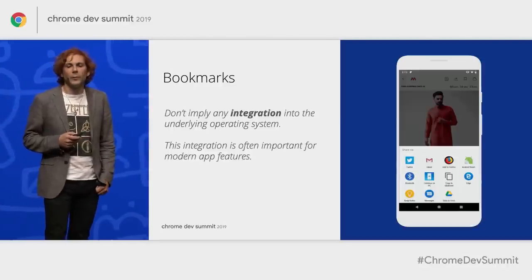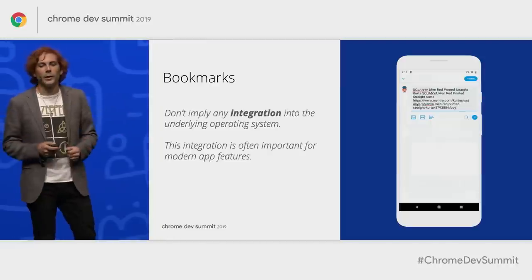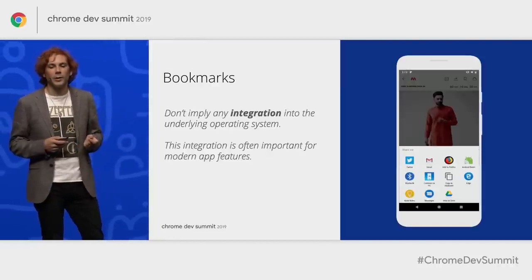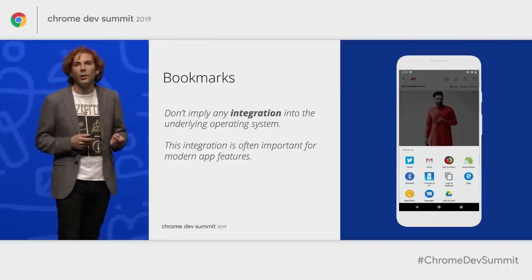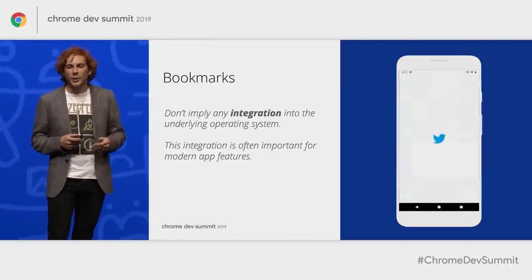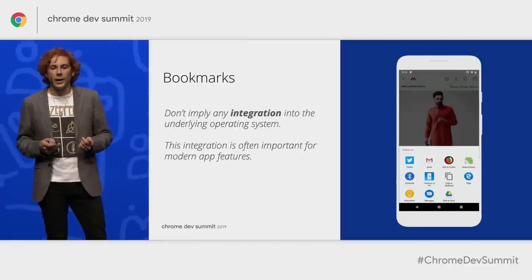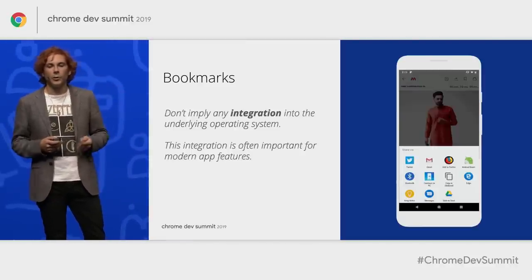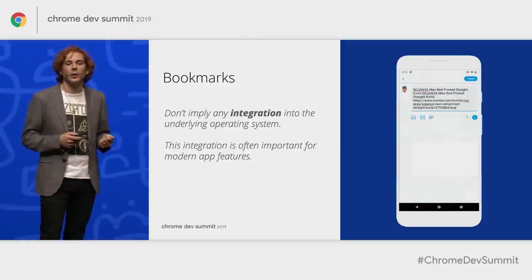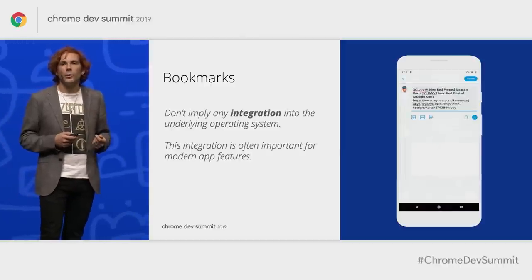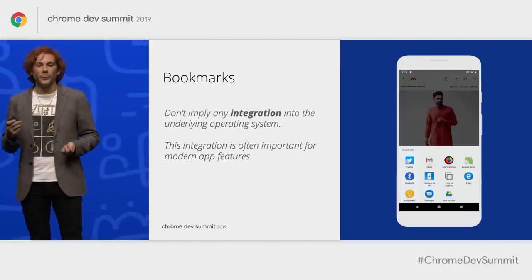The second challenge for bookmarks on mobile is that apps are integrated into the mobile OS in ways that are important for functionality. For example, a lot of apps need to tie into Android's native sharing sheet — you can see that on the right side of this slide, where a URL is shared from the Mentor PWA to Twitter. To enable a share target, we need an OS-level entity, something like an APK on Android, not just a bookmark.